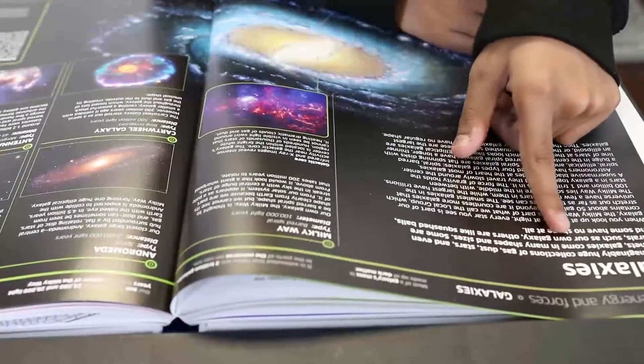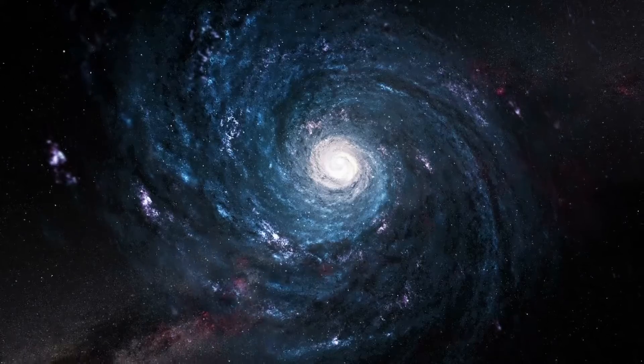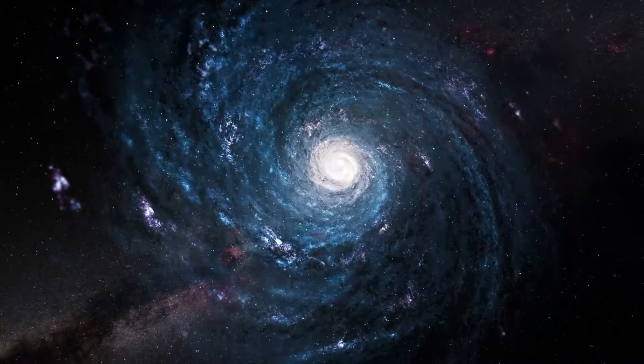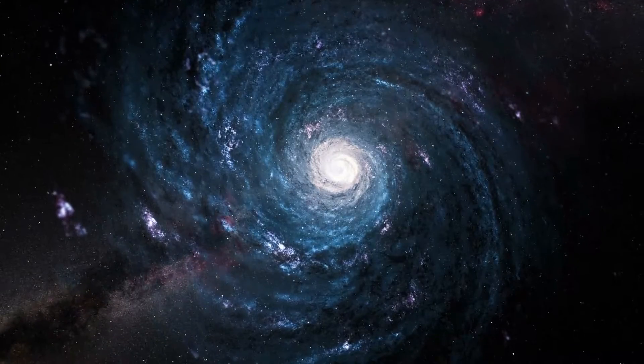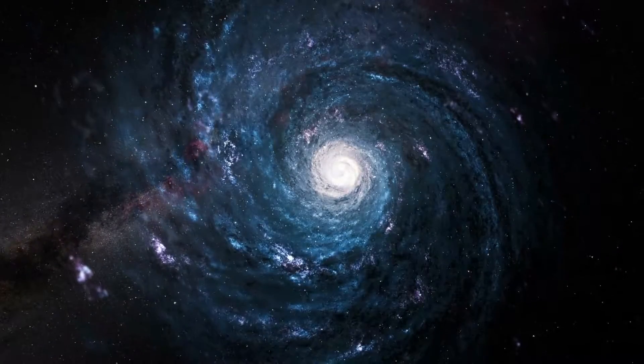Huge galaxies of gas, dust, stars and even planets. Galaxies come in many shapes. Some are spirals such as our own galaxy, others like squished balls and some have no shape at all.